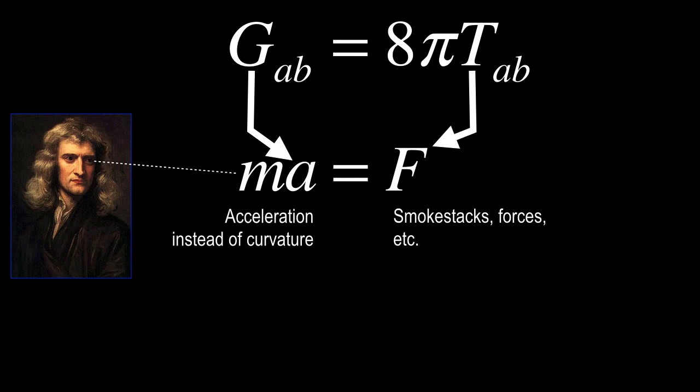So like GM1, M2 over R squared would be encoded over here in the stress energy tensor. And then over here on the left, the Einstein tensor, this is where all the elegant mathematics is. And it encodes the curvature and the geometry of space time itself. And so I always like to use a picture of a beautiful garden. And actually, both of these photos are photos from the island of Japan. One is from a beautiful, famous garden. And one is from the smokestacks down by Osaka.